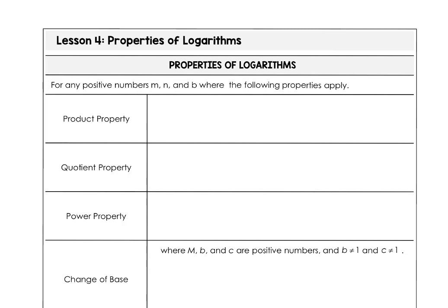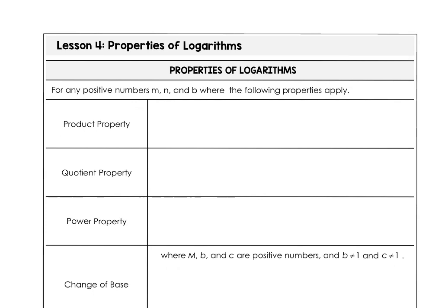The product property for a logarithm: log base b of some number m times some number n — we can separate that logarithm of a product by saying it's log of the first number m plus the log of the second number n. So the sum of the logs corresponds to the log of a product.